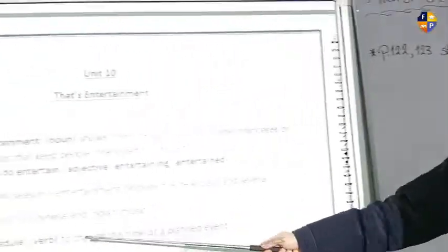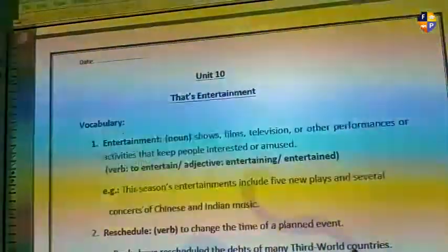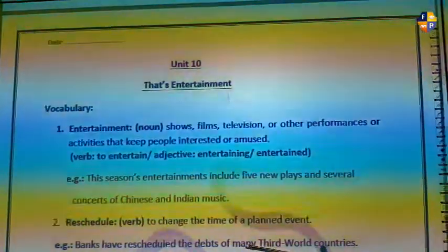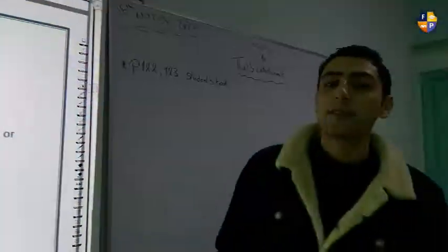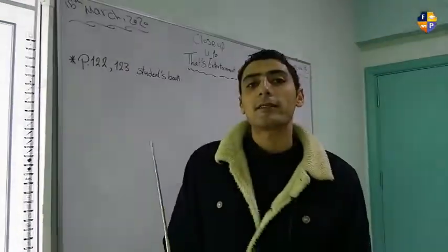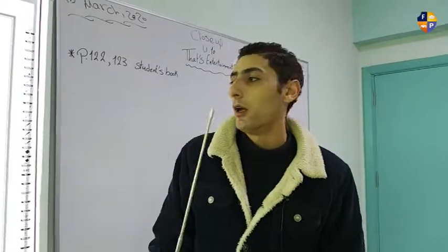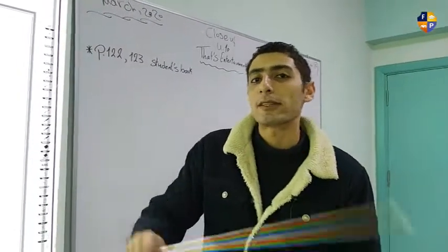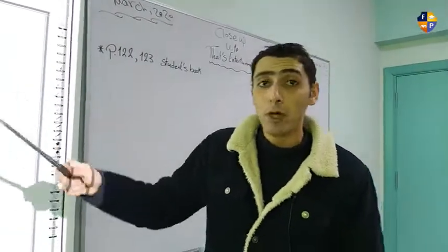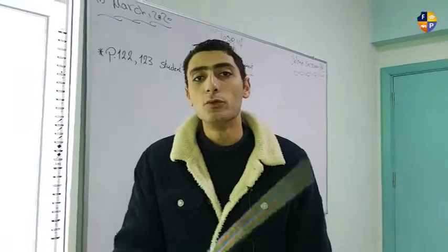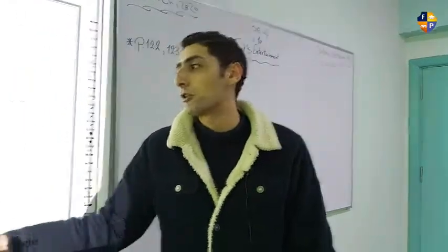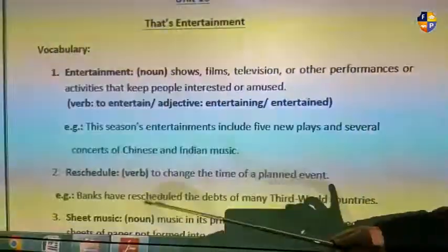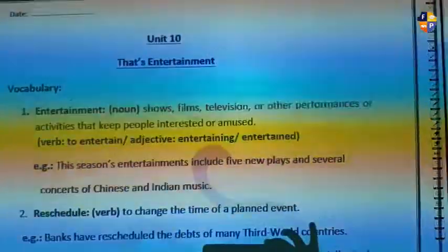Number two is 'to reschedule,' and this is a verb. It means to change the time of a planned event. For instance, if the event is taking place at two o'clock, you have to reschedule to make it at three. So you have to tell everyone that the new rescheduled time is going to be three. Reschedule is a verb meaning to change the time of a planned event.